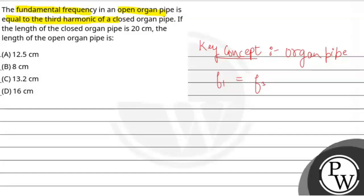Now, what is the fundamental frequency of an open organ pipe? For open organ pipe, frequency F1 is N into V over 2L. N value is 1, so V over 2L.